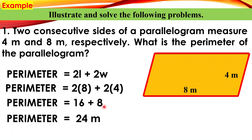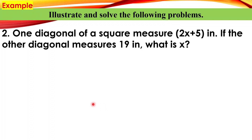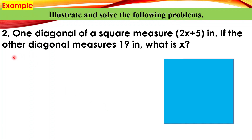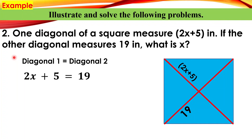The perimeter of the parallelogram is 24 meters. For example number two: one diagonal of a square measures 2x plus 5. If the other diagonal measures 19 inches, what is x? Since the diagonals of a square are equal, diagonal one equals diagonal two. Substituting: 2x + 5 = 19.